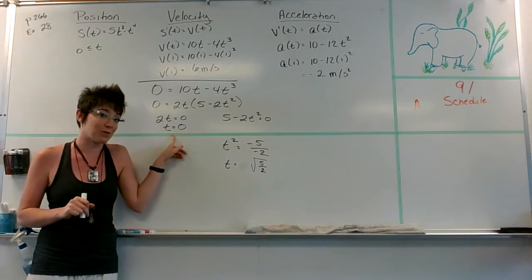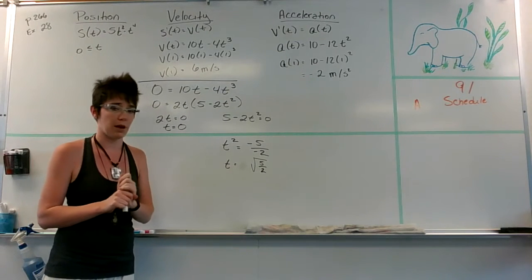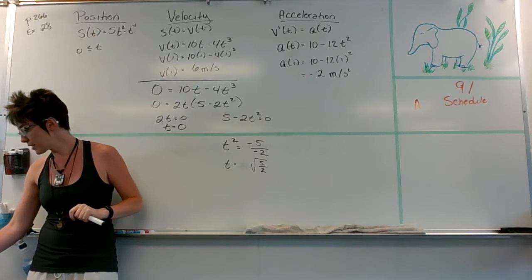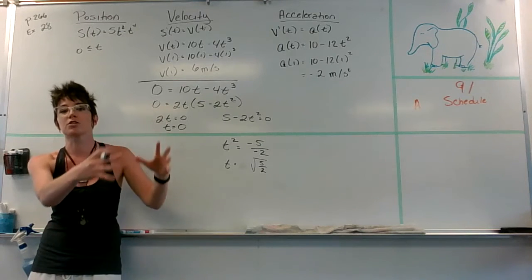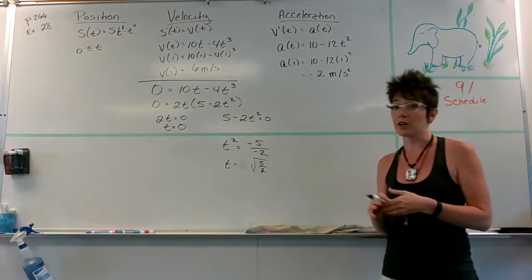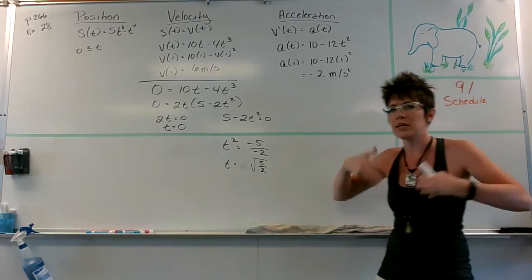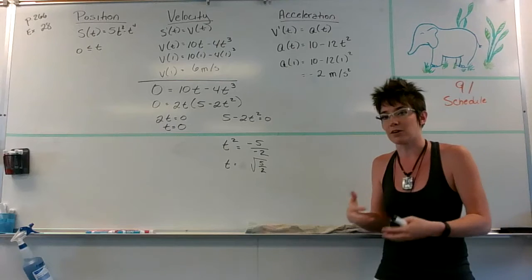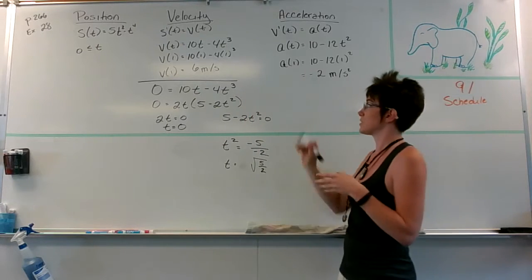Part D says find the time intervals on which the particle is speeding up and the intervals in which it's slowing down. Is this an acceleration or velocity question? From our previous conversation, that's acceleration — I'm talking about my speed changing. Am I speeding up or slowing down? That's really asking how is your velocity changing: is it increasing or decreasing? So it's an acceleration question.